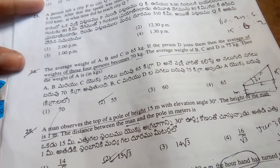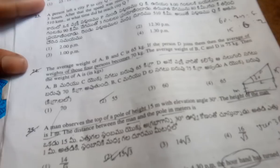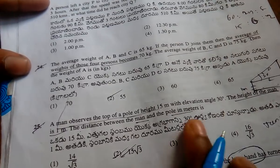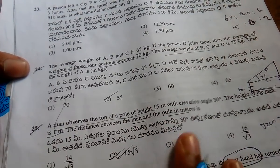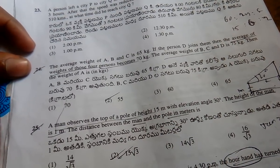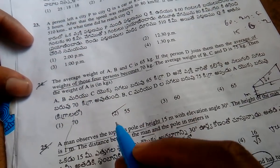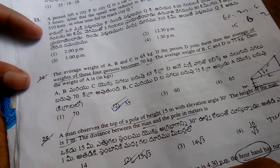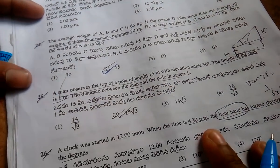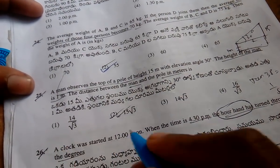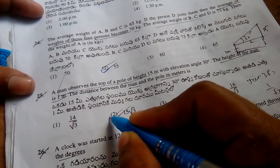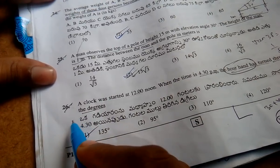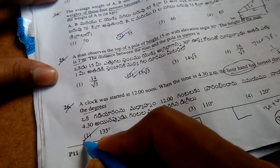Hi friends, September 2020 Telangana Constable Exam, I will discuss just now. See here it is Set D. Question 24 answer is B, 55. Question 25 answer is 15 root 3. Question 26 answer is 135 degrees.